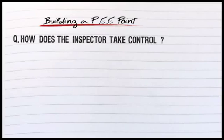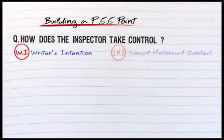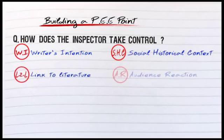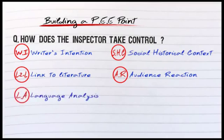So now we're actually going to try and put together a PEE point — a detailed one to a high level. We're looking at the writer's intention, things like social and historical context, links to other literature, audience reaction, and language analysis. We'll look at a couple of these in this one.